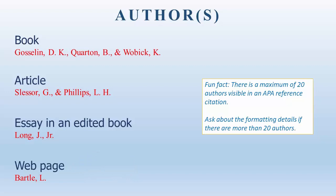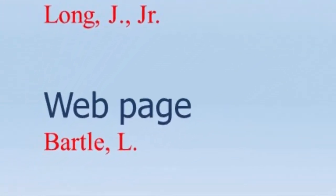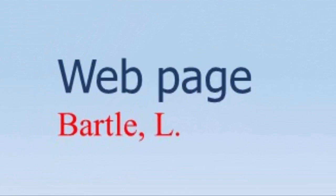In APA, the author's last name appears first, followed by a comma, a space, and then the initial of the first name and a period. Looking at the bottom example and moving up, you can see Bartle, comma space, L, and a period. Even if the first name is provided, you do not use it. Using initials is the rule for APA.